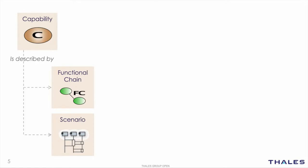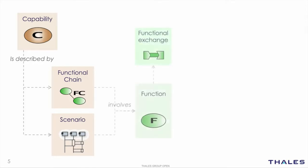Functional chains and scenarios are used, for example, to capture nominal and degraded cases. The typical usage is to relate them to test procedures. Functional chains and scenarios involve atomic functions or actions that have dependencies between each other. A function produces outputs that are consumed by other functions. These dependencies are called functional exchanges.